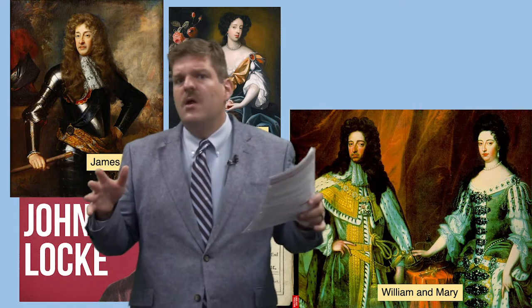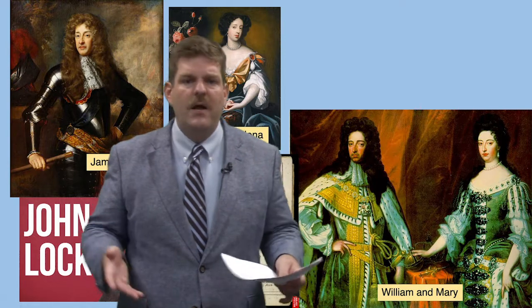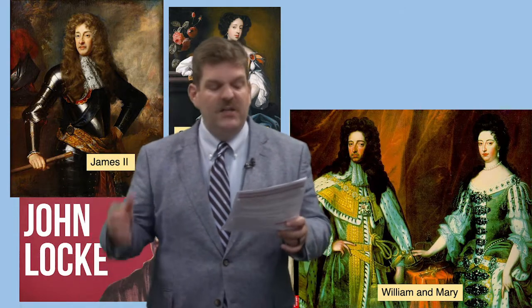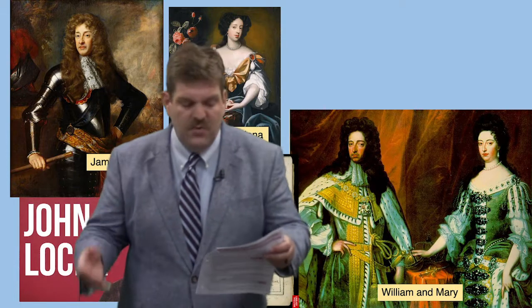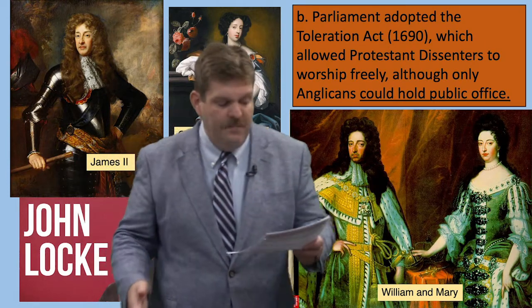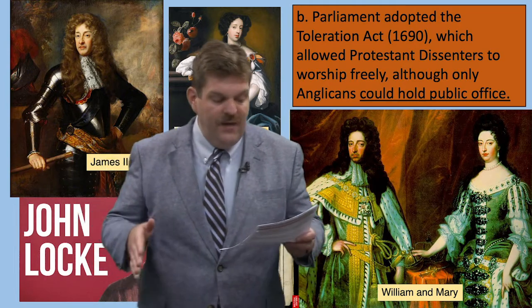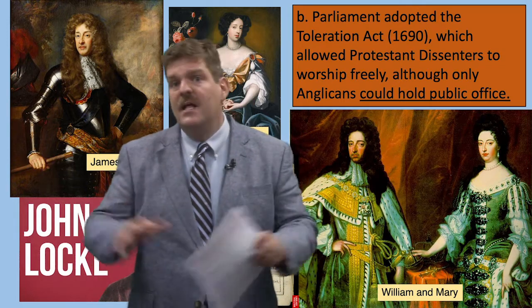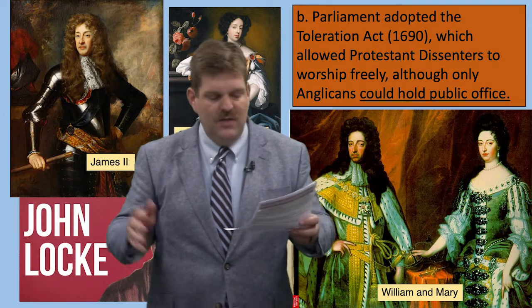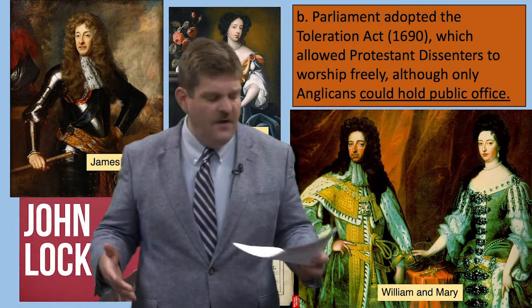William and Mary ruled together over England and agreed to rule as constitutional monarchs, meaning they accepted limits put on them by Parliament, specifically loyal to the Protestant Reformed religion. William and Mary also agreed to a Bill of Rights in 1689 that guaranteed individual rights, things like trial by jury, guaranteed from the crown. Parliament also adopted the Toleration Act of 1690, which allowed Protestant dissenters to worship freely, although only Anglicans could hold public office. Those two acts together — the Bill of Rights and the Toleration Act — bolstered the idea that liberty was the birthright of all Englishmen.